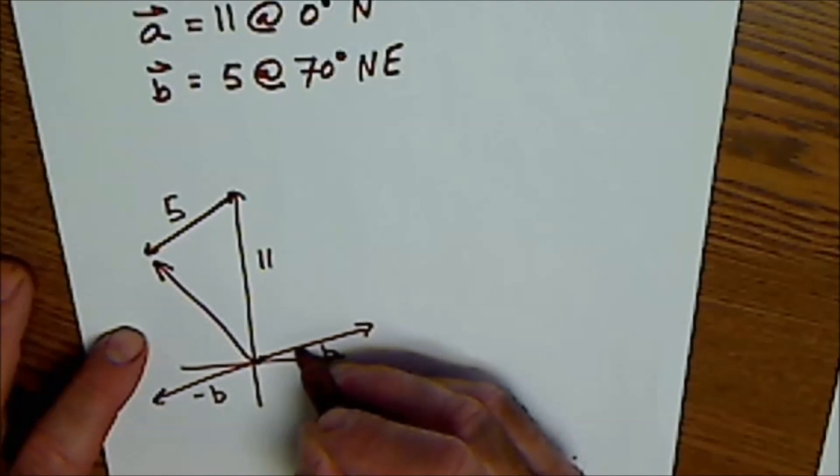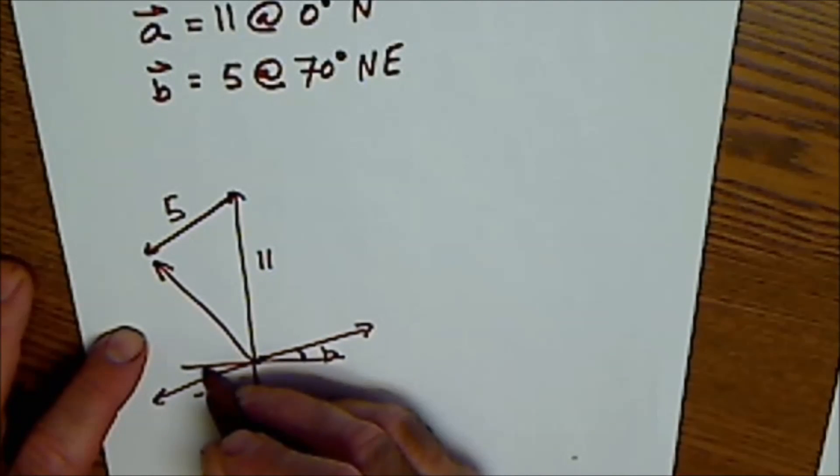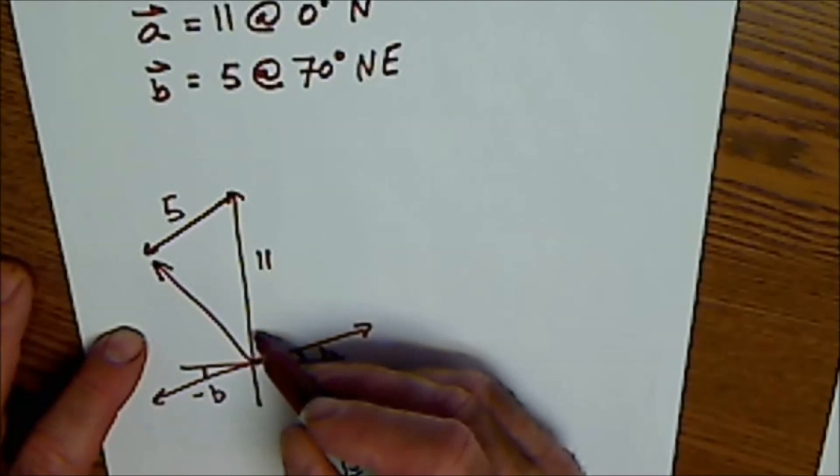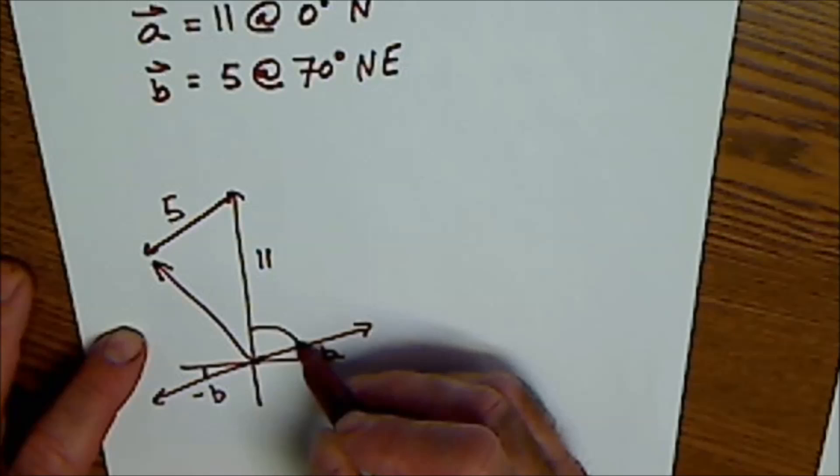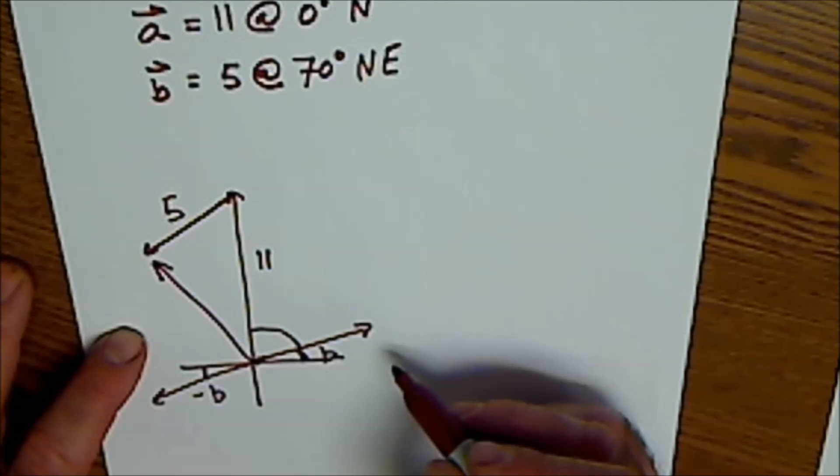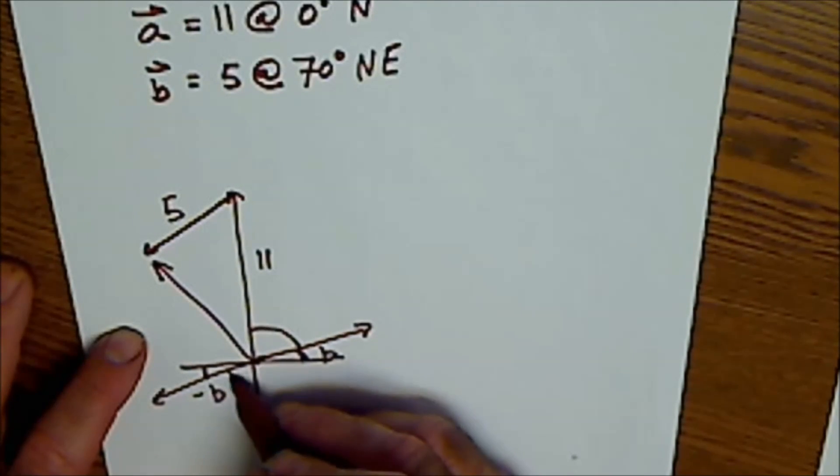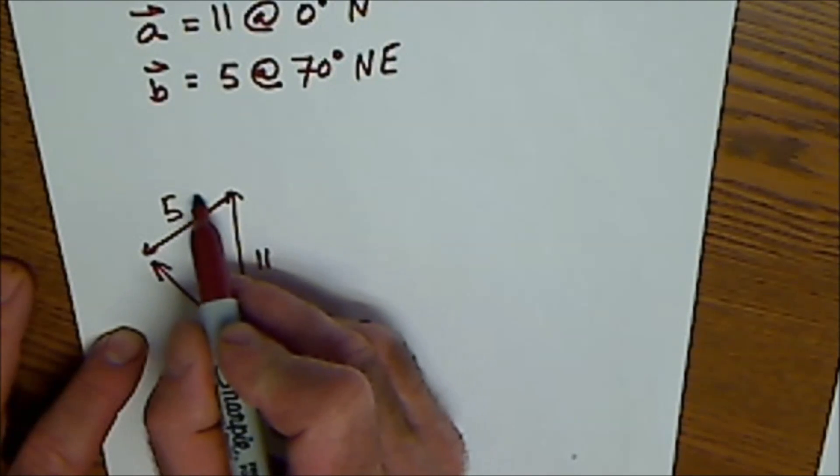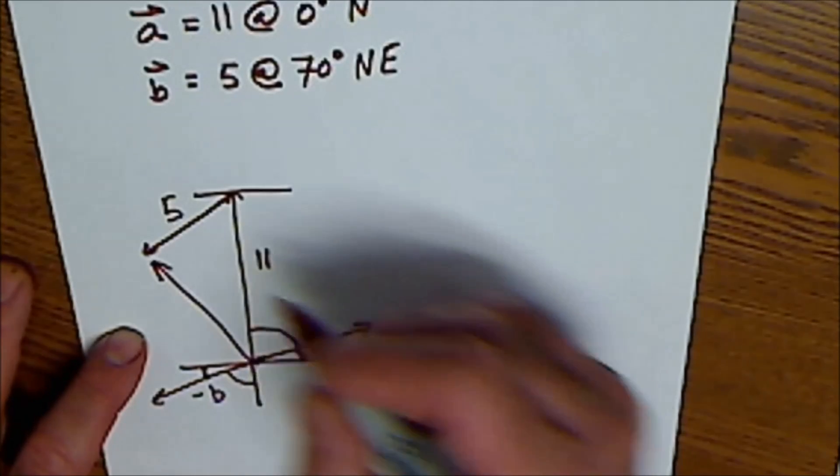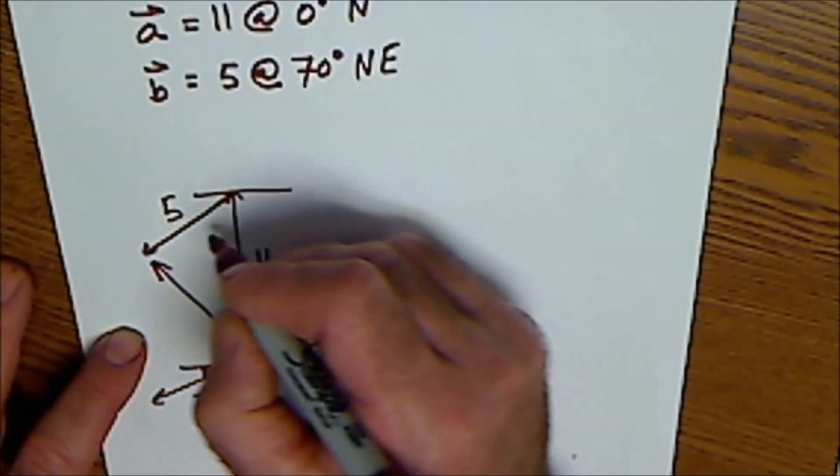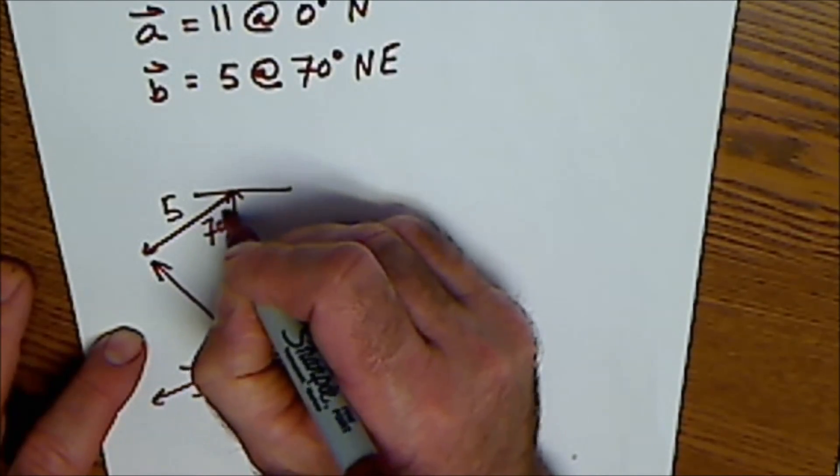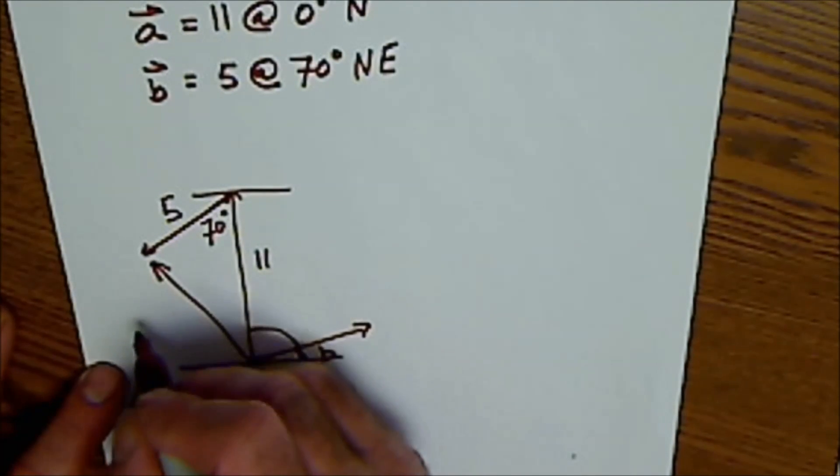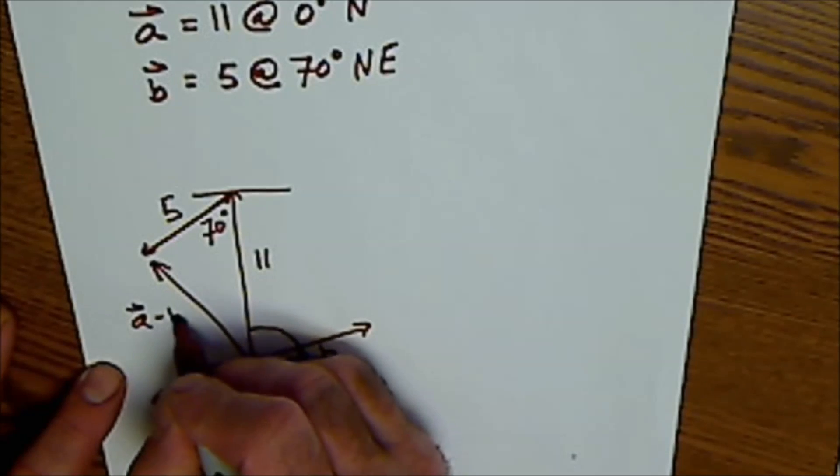So if this is 20 degrees, this would be 20 degrees. Everybody follow that? This is 70. This is complement at 20. So this is 70. It's complement at 20. So it's 20 degrees below horizontal. So if that's horizontal, this would be 20, and this would be 70. So my resultant vector of A minus B is this vector here.